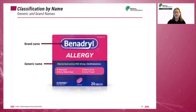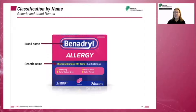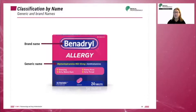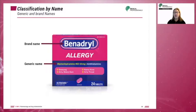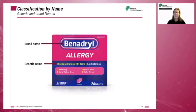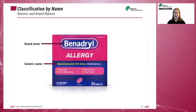The generic name is the name given to the drug when it becomes commercially available. It is usually simpler, but derived from the chemical name.